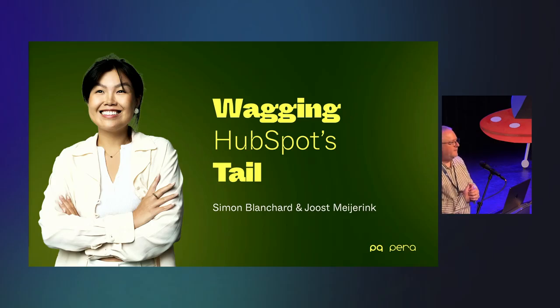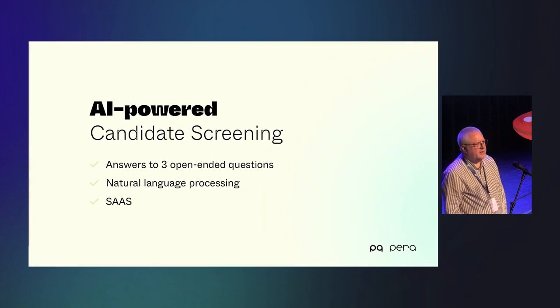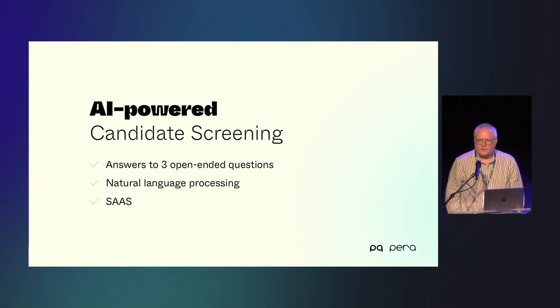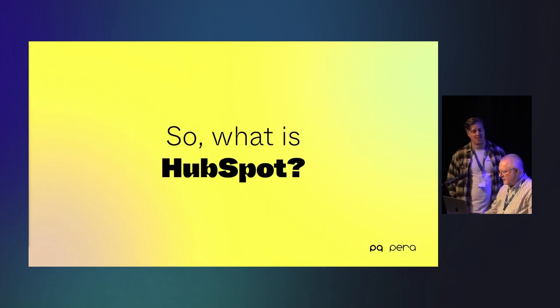I'm Simon, I'm the CTO of Para. My name is Joost Meierink, I'm a product designer. I'm going to talk about technical things and then Joost will talk about more interesting things. Para is a startup started in 2015. We do what we now call AI-powered candidate screening — we ask candidates to give us natural language and run that through various AI and machine learning models to produce scores. We serve the HR industry on a SaaS platform built on top of Django since 2015, and I've personally been using Django since 2004 — 20 years.